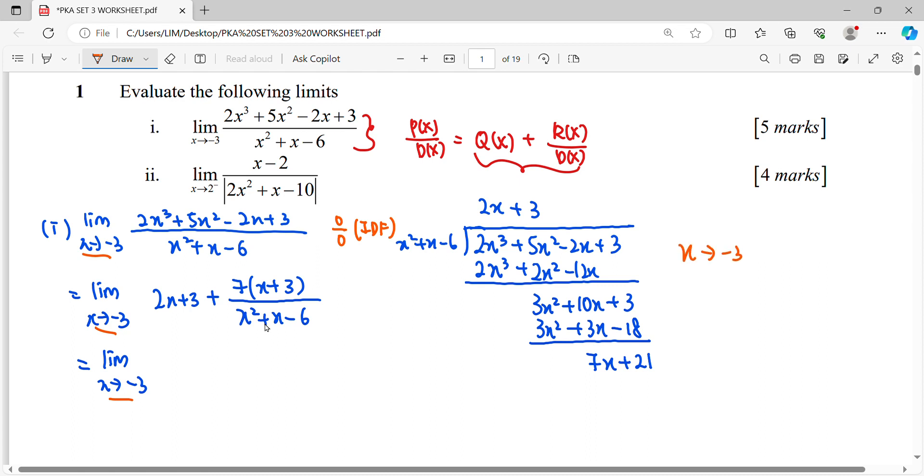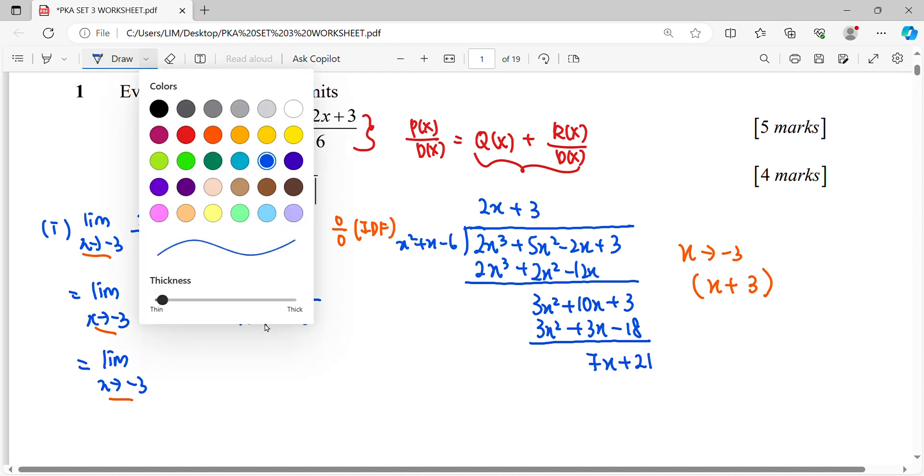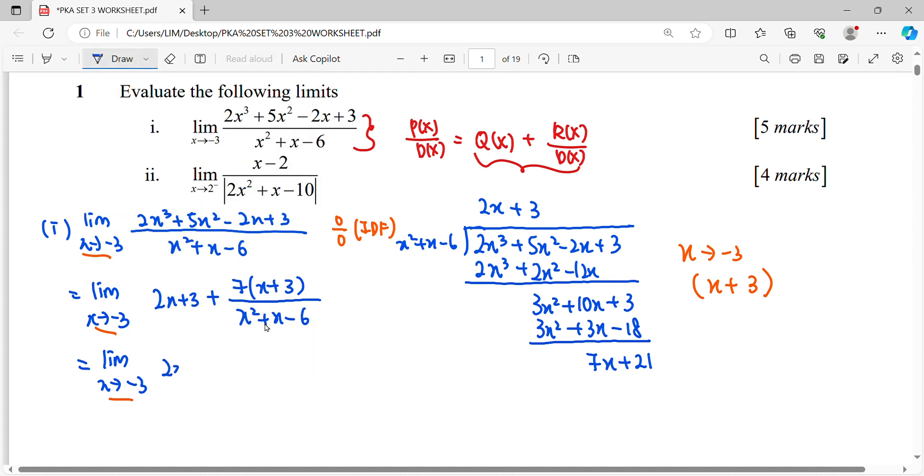Since X approaches negative 3, we need to simplify the factor of X plus 3. We factorize the quadratic part of the divisor to reveal the factor of X plus 3, which can then cancel.